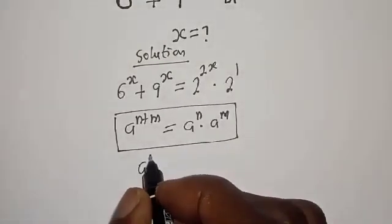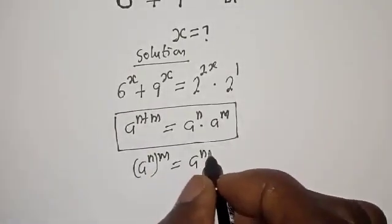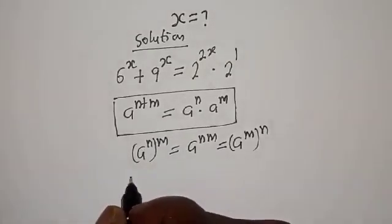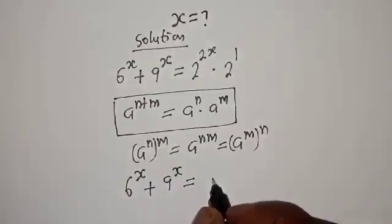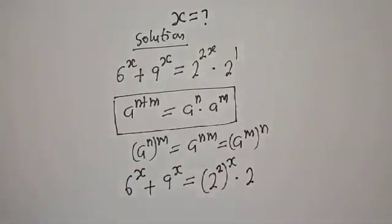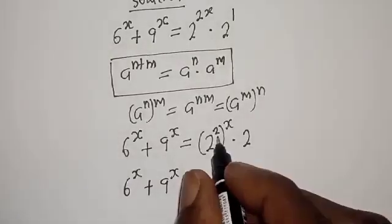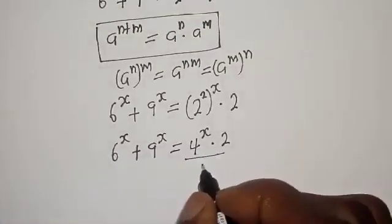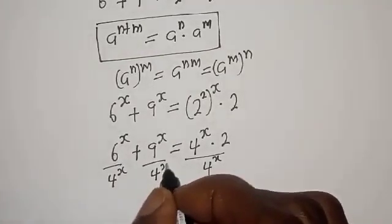That is from this rule: if you have a raised to power n plus m, it equals a raised to power n multiplied by a raised to power m. Also, if you have a raised to power n to the power m, this equals a raised to power nm. So we have 6 raised to power s plus 9 raised to power s equal to 2 raised to power 2 to the power of s, multiplied by 2.